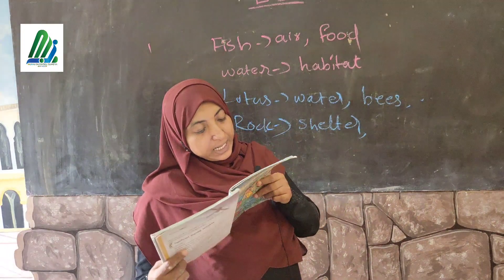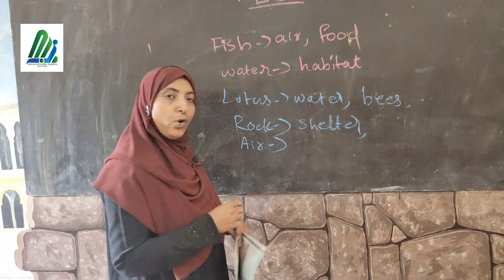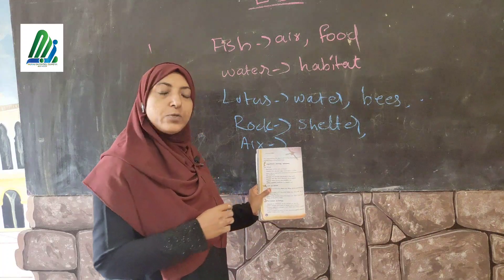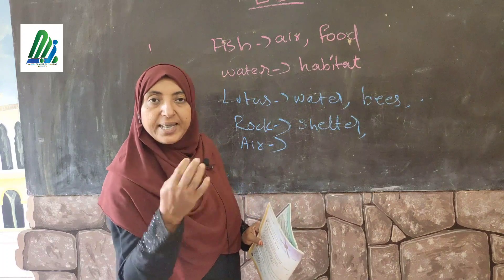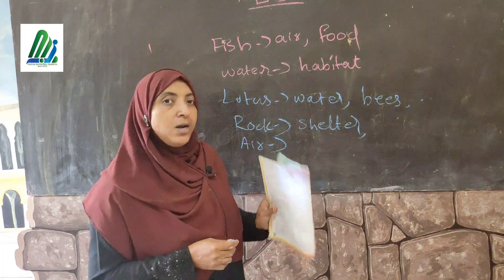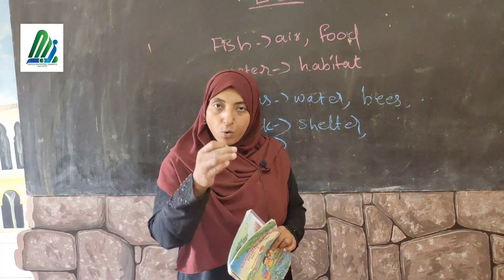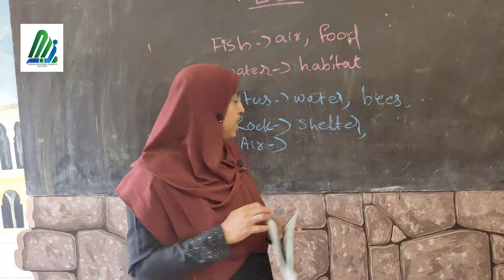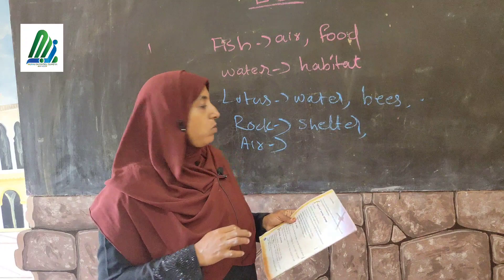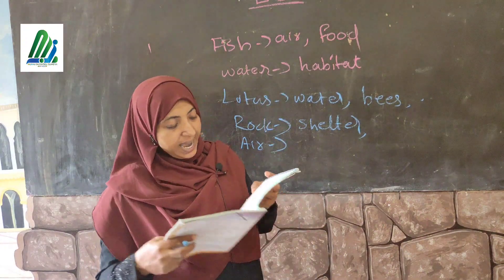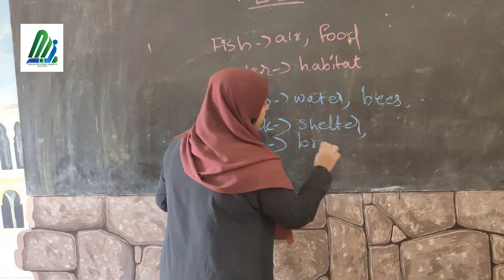Another abiotic factor is air. Air is very essential for all organisms because they need air to breathe. So you can write: air provides the facility to live. Air is an abiotic factor and it provides facilities for all organisms — for their life — because air is very essential to breathe.